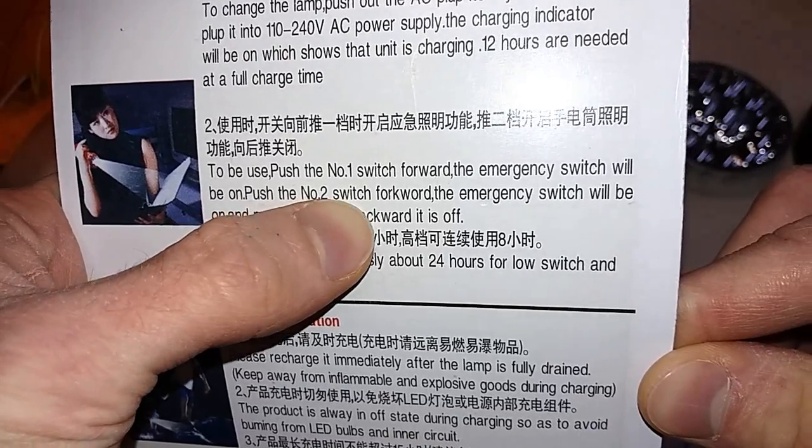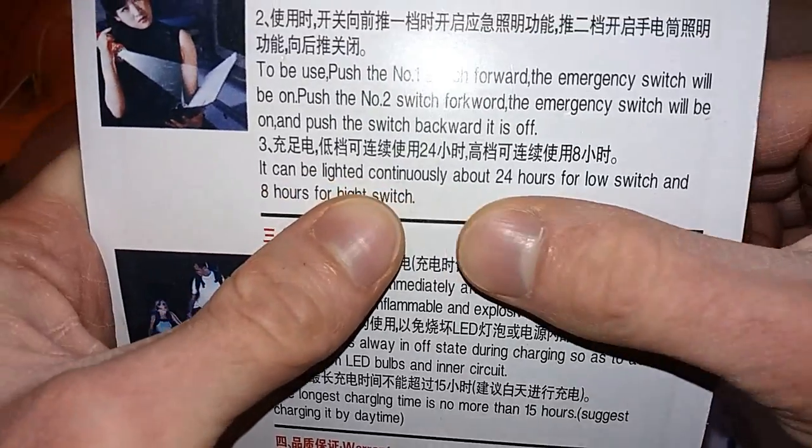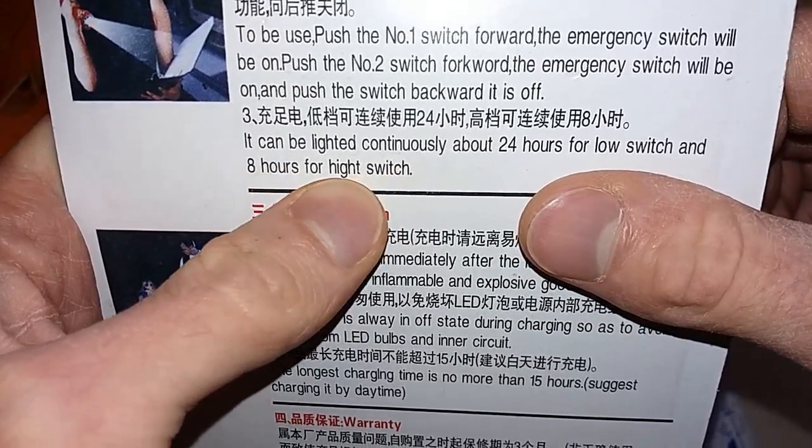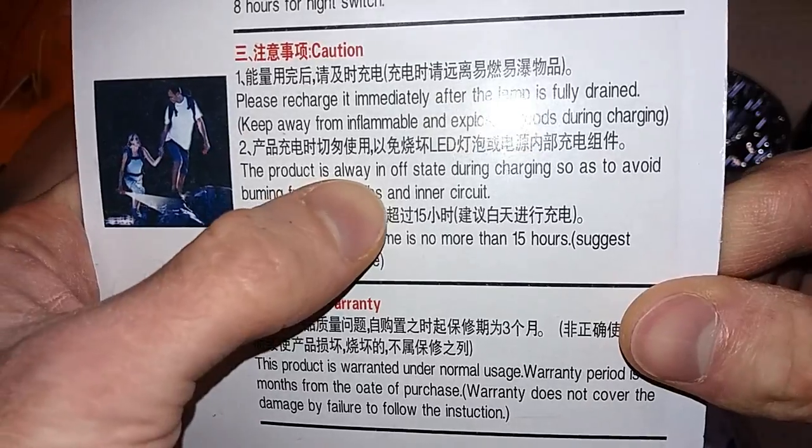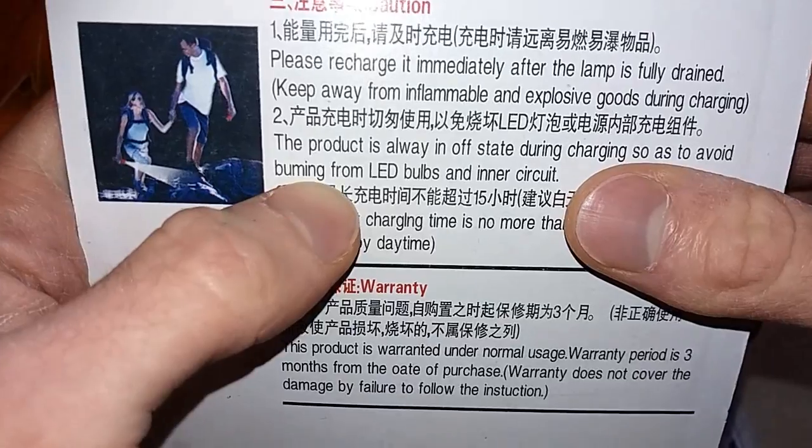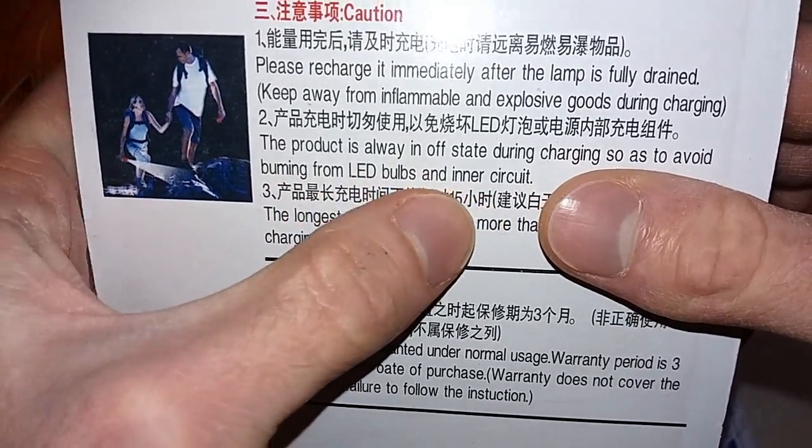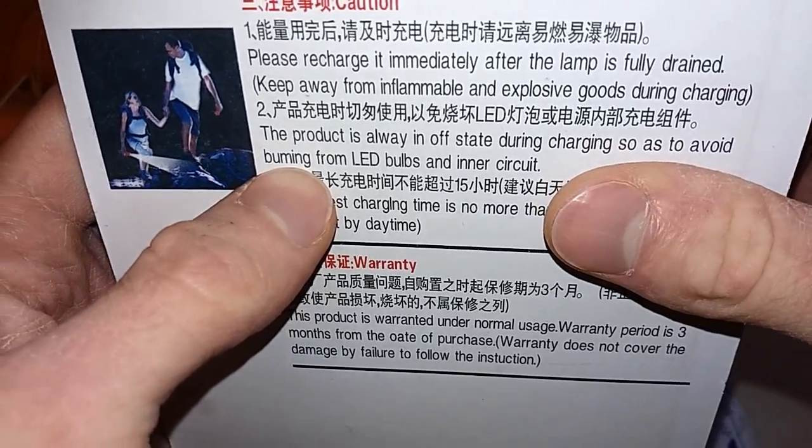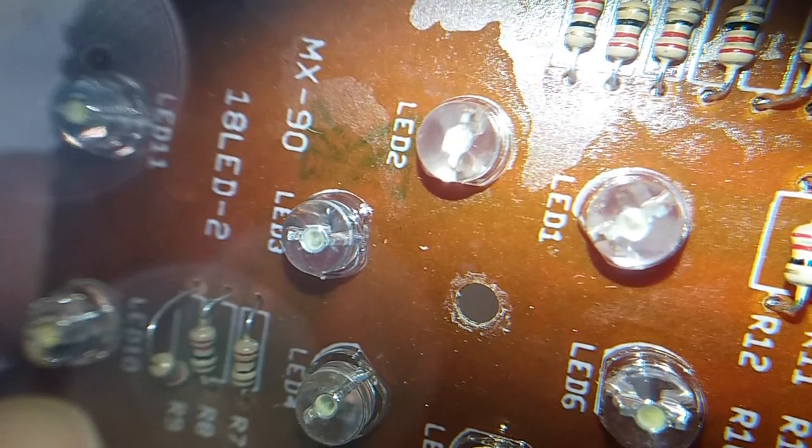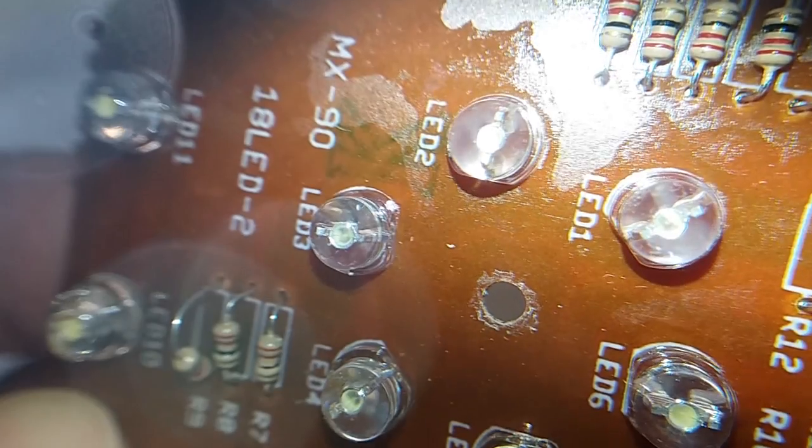Number two, switch forward. It can be lighted continuously about 24 hours for low switch and eight hours for high switch. The product is always in off state during charging so as to avoid bombing from LED bulbs and inner circuit. So we have to avoid bombing. As you can see, those LEDs are already black inside. Can you see it?